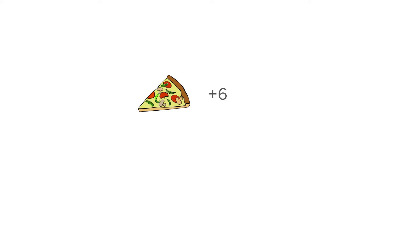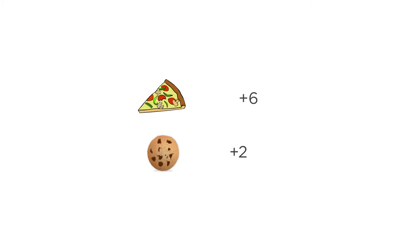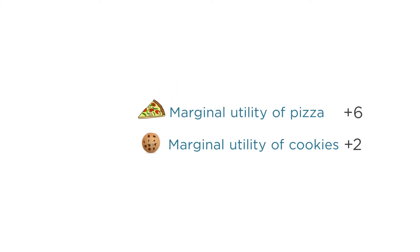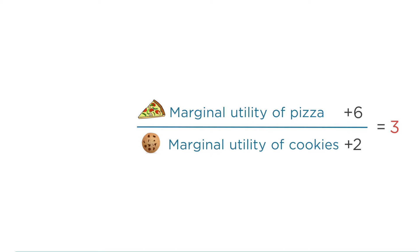So let's say you've already had a few pizza slices and cookies, and you're debating what to buy and eat next with your remaining money. At this point, let's say another slice of pizza would increase your utility by 6 points, and another cookie would increase your utility by 2 points. These are the marginal utilities for pizza and cookies. What's important is the ratio of these values: 6 divided by 2 is 3. So 3 is the marginal benefit of pizza, expressed as the ratio of the marginal utility of pizza to the marginal utility of cookies.